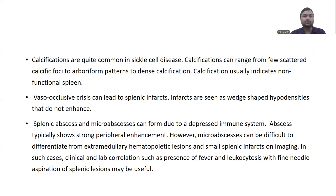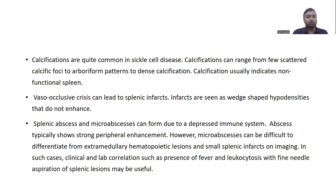Calcifications are quite common in sickle cell disease and can range from punctate scattered calcific foci to arboreal or lace-like patterns to dense calcification. Calcification usually indicates a non-functional spleen. Vaso-occlusive crisis can lead to splenic infarcts, seen on imaging as wedge-shaped hypodensities that do not enhance. Splenic abscesses and micro abscesses can also form due to a depressed immune system. Abscesses typically show strong peripheral enhancement; however, micro abscesses can be difficult to differentiate from extramedullary hematopoietic lesions and small splenic infarcts on imaging.